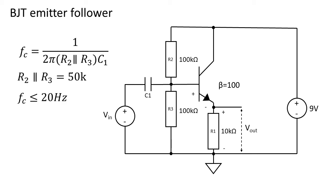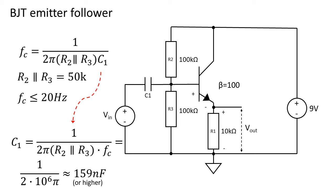R2 parallel to R3 is 50k ohms and we want the cutter frequency to be lower than 20 hertz. If we rewrite the formula to calculate for C1, we get a value of 159 nF, but a higher value will work too.